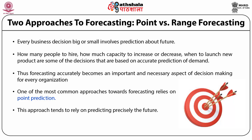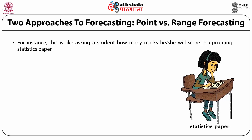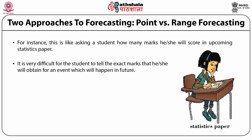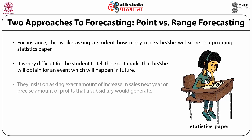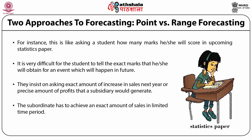The point prediction approach tends to rely on predicting precisely the future. For instance, this is like asking a student how many marks he or she will score in an upcoming statistics paper. It is very difficult for the student to tell the exact marks that he or she will obtain for an event which will happen in the future. But most companies tend to follow this approach — they insist on asking the exact amount of increase in sales next year or the precise amount of profits that a subsidiary would generate. Another similar analogy is the sales target that a manager imposes on his or her subordinate, who has to achieve an exact amount of sales in a limited time period.